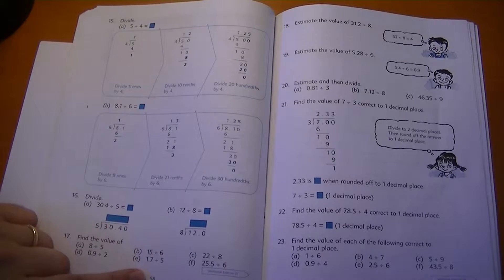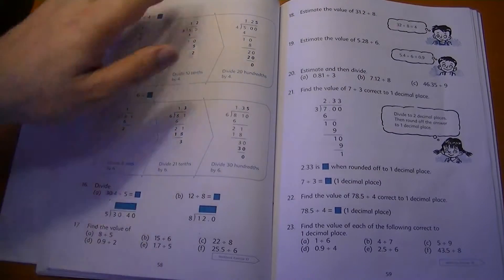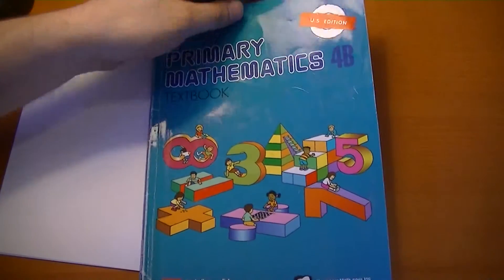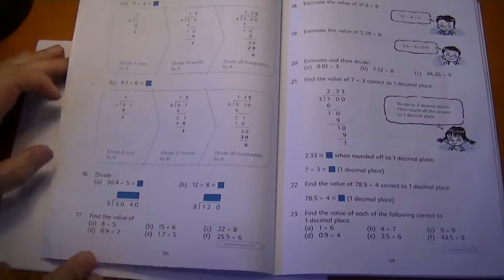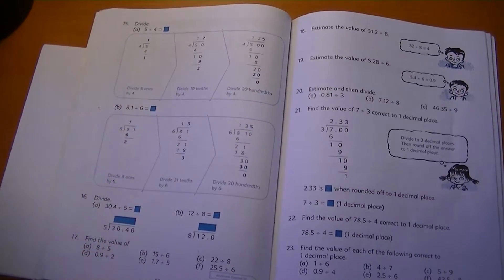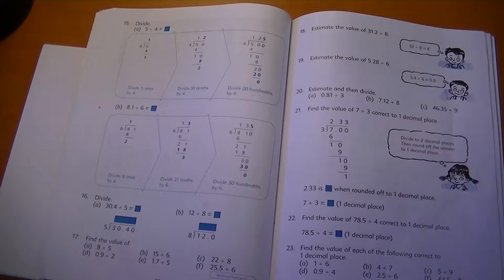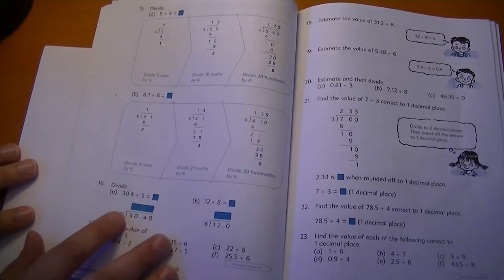We're going to cover page 58 of Singapore Math. This is book 4B, the textbook Primary Math U.S. edition, page 58. This is how to divide. We're at the point now where we're not going to use remainders anymore. So this is how you divide for reals.